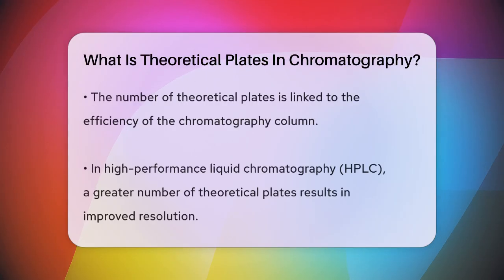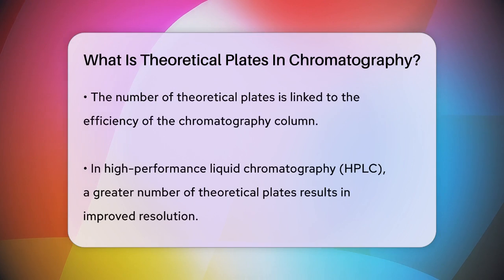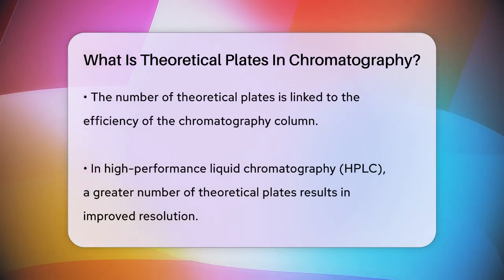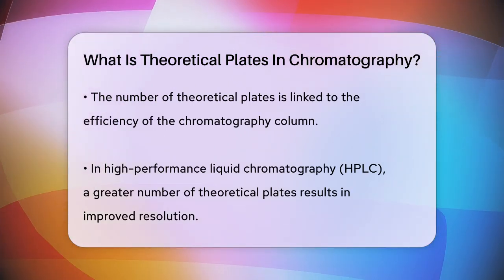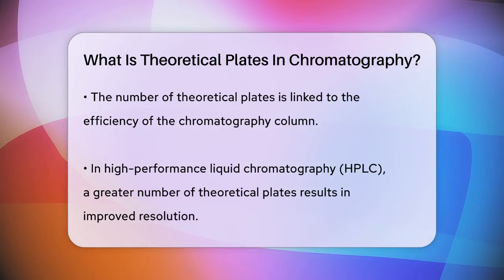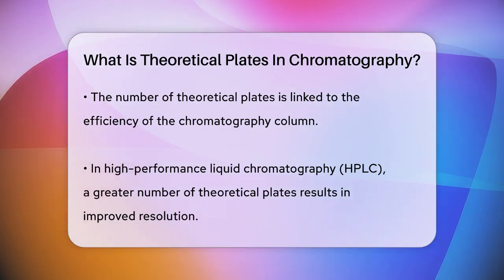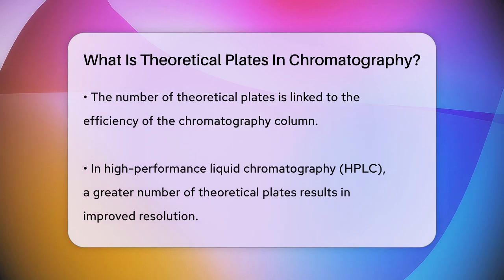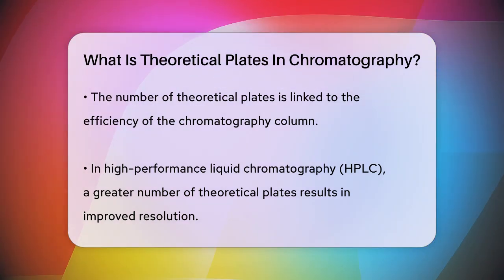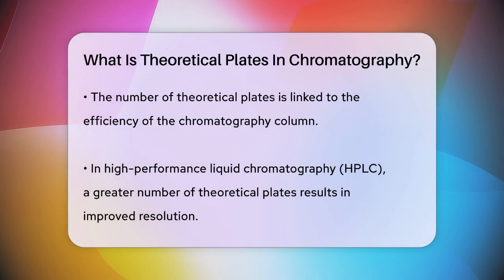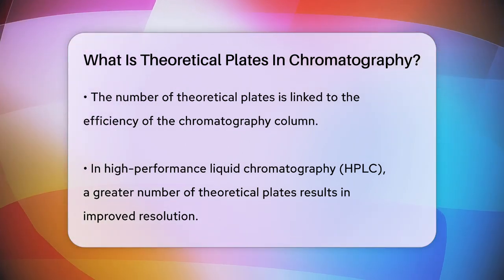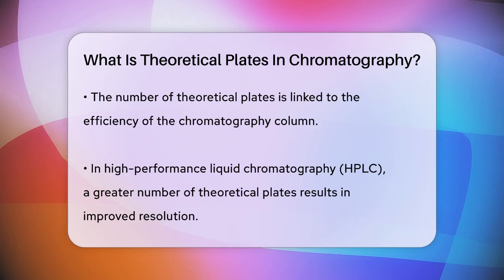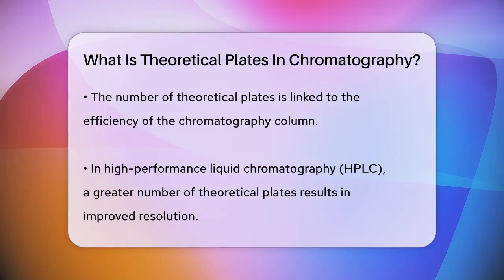The number of theoretical plates in a column is directly related to its efficiency. For instance, in high-performance liquid chromatography, HPLC, more theoretical plates mean better resolution. This is why longer columns, or columns with smaller inside diameters and thinner stationary phase films, can have thousands to tens of thousands of theoretical plates, significantly improving the separation.